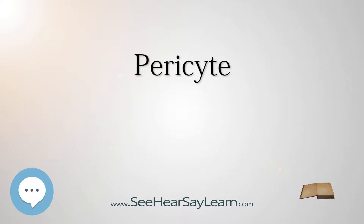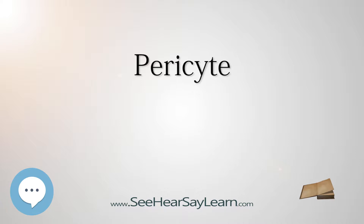Pericytes stabilize and monitor the maturation of endothelial cells by means of direct communication between the cell membrane as well as through paracrine signaling. A deficiency of pericytes in the central nervous system can cause the blood-brain barrier to break down.